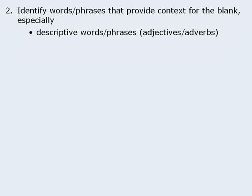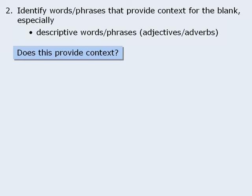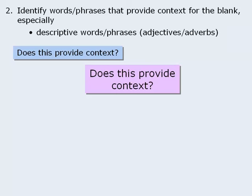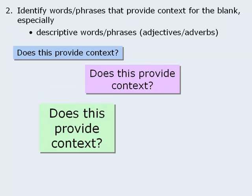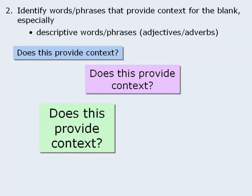Since the strategy is all about context, the main question you should be asking yourself as you read each sentence is: does this word or phrase provide context for the blank? For a great number of questions, the context will be in the form of an adjective or adverb — words and phrases that describe things or actions.